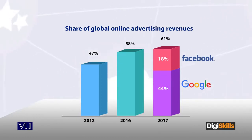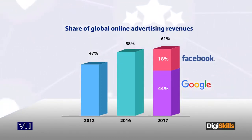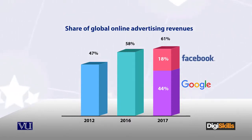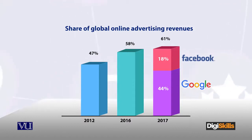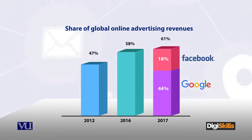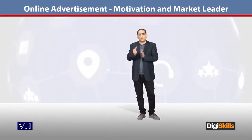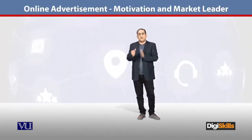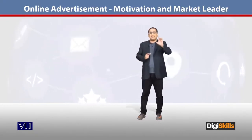Of that 25%, 44% was advertised through Google. And Facebook — 18% of the money was spent on Facebook to market their products. So 44% is the percentage people spent on Google and 18% on Facebook.